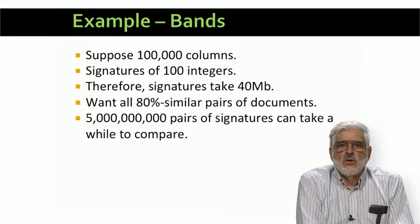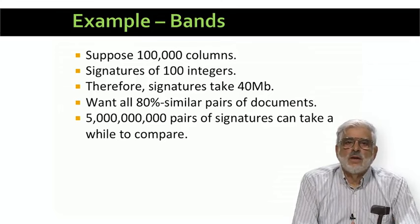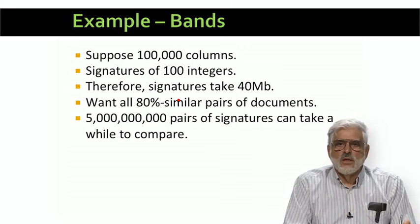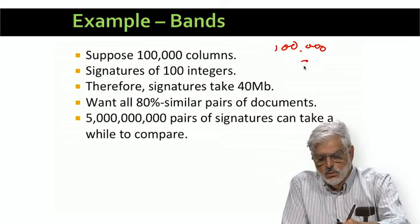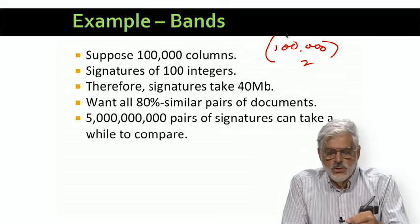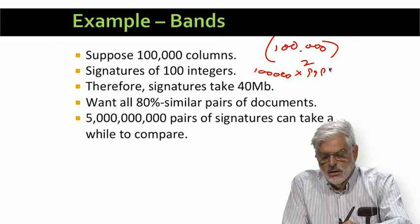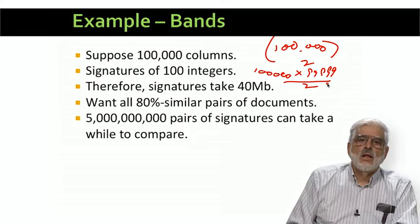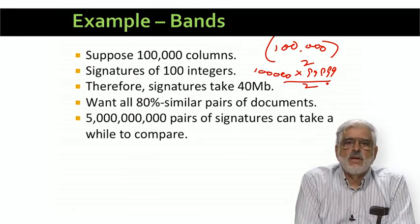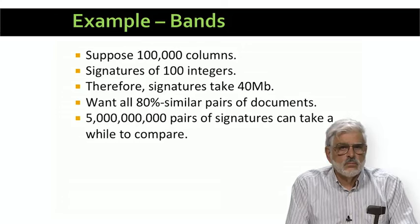The exact number of pairs from 100,000 items is 100,000 choose 2, which equals 100,000 times 99,999 divided by 2. Approximating 99,999 as 100,000, we get exactly 5 billion.